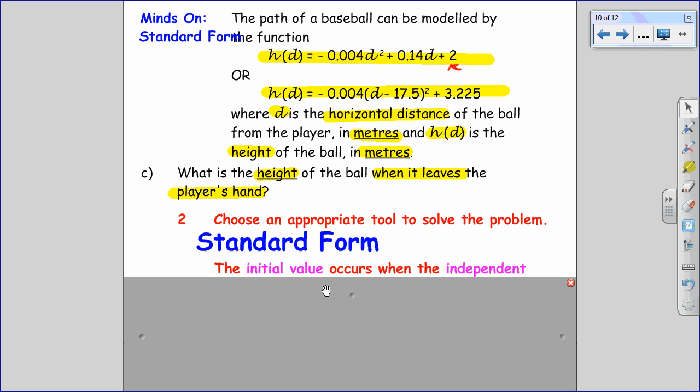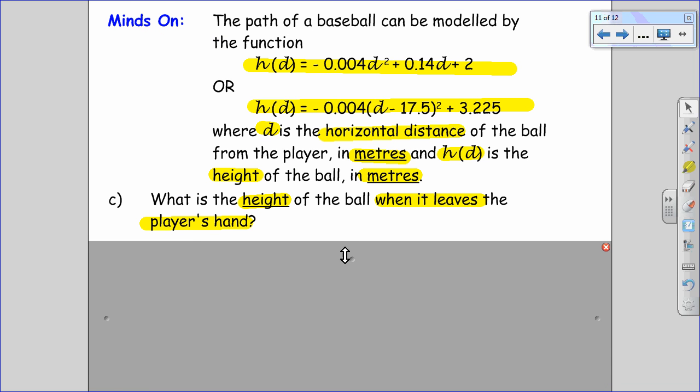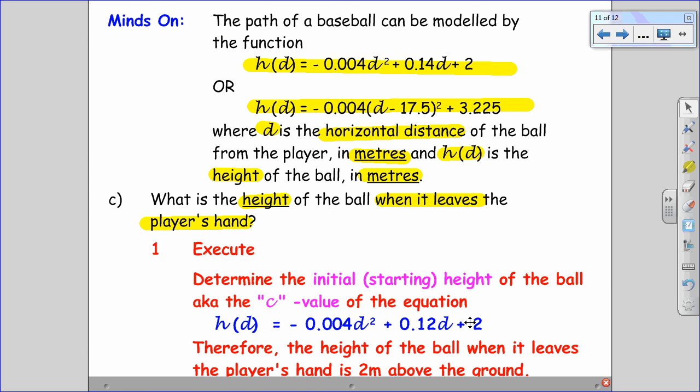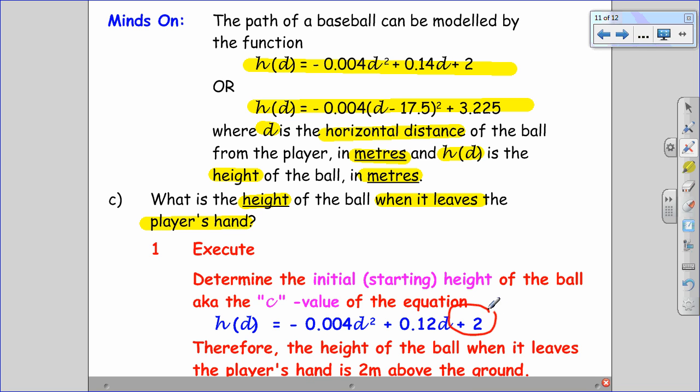Because the initial value is what I'm looking for. An initial value is really my y-intercept, which occurs when the independent variable is zero. So I want my standard form equation, and I'm looking for the C value. And in this situation, the C value is just this two right here. So when the ball leaves the player's hand, it's two meters above the ground.